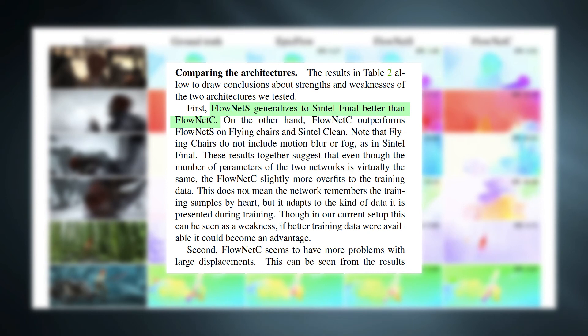FlowNet Simple tends to generalize well on the Sintel dataset. However, FlowNet with correlation layer achieves better result in Flying Chairs dataset.